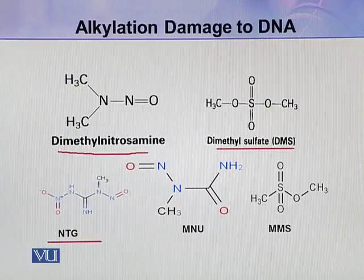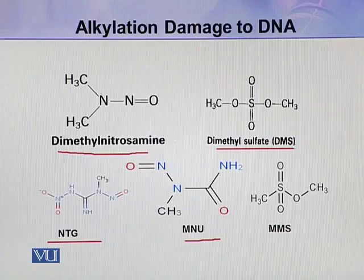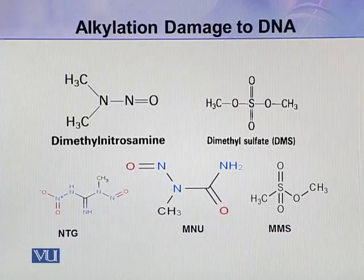Other examples include NTG (N-nitro-N-nitrosoguanine), MNU (N-methyl-N-nitrosourea), and MMS (dimethyl methane sulfonate). These are some naturally occurring or synthetic compounds which cause alkylation damage to the DNA.